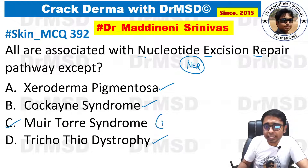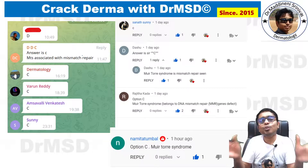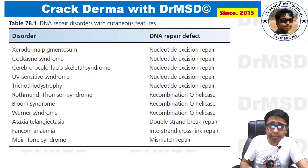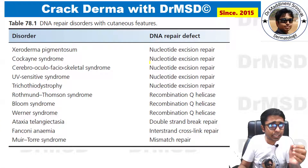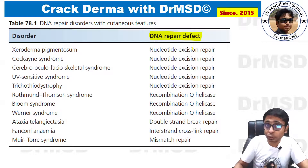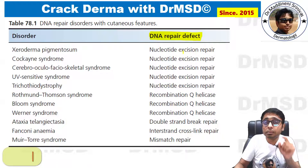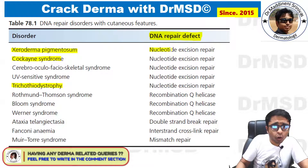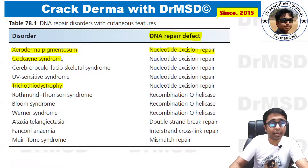In Muir-Torre syndrome, it is mismatch repair which is the basic DNA repair defect. I am very happy that almost all the students who commented have given me the correct answer. This is going to be a very important quick revision of all the dermatologically important diseases and their DNA repair defects. You can see: xeroderma pigmentosum, Cockayne syndrome, and trichothiodystrophy — these are the important diseases which are all due to nucleotide excision repair defects.